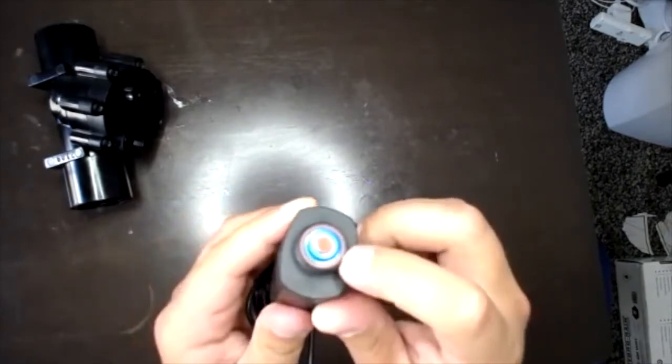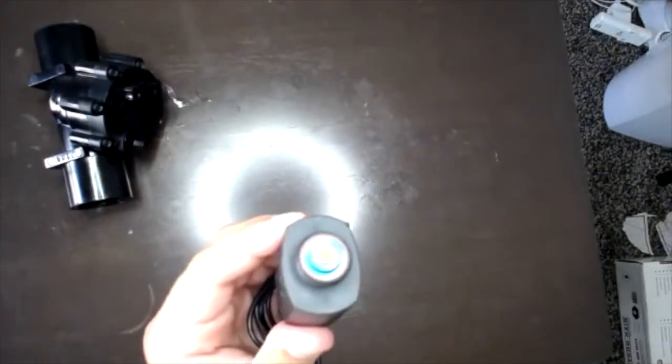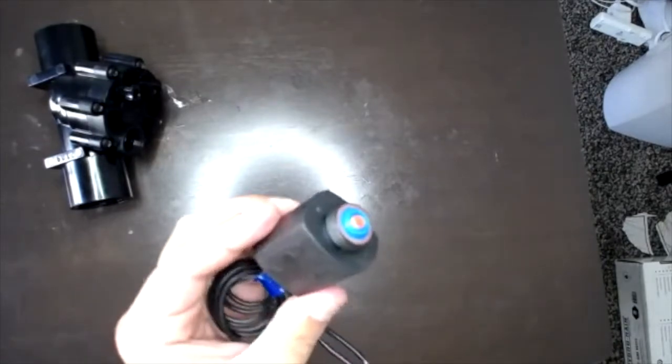So if you ever notice that seal is gone, you either need to go get a new seal or a new solenoid, because that will prevent it from working properly.